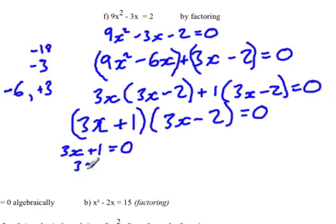And so 3x, this simplifies to be 3x = -1, divide both sides by 3. So x then is equal to -1/3.